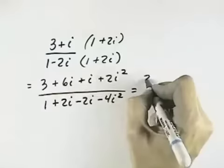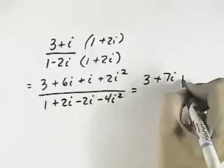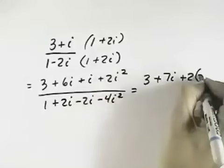So simplifying, we've got 3 plus 6i plus 1i is 7i, and then plus 2 times i squared is actually a negative 1.